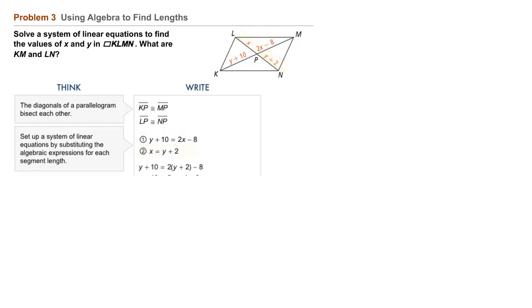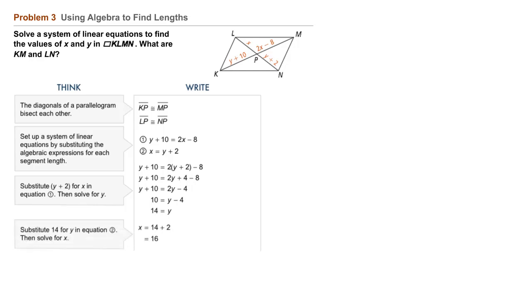Now we can use the substitution method to solve this system of equations. We'll substitute Y plus 2 for X in equation 1, and then we solve for Y. We find that Y equals 14, and now we can substitute 14 for Y in equation 2 and solve for X. We find that X equals 16.